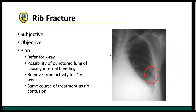For a rib fracture, the subjective and objective components are the same as a rib contusion. If you suspect a fracture, objective findings often include a positive rib compression test or sharp localized pain. Refer for an x-ray — if it's fractured, you're concerned about whether the rib has punctured a lung and whether air or blood is getting into the pleural cavity. Rib fractures take about four to six weeks to heal, and we typically splint the rib cage during that time.